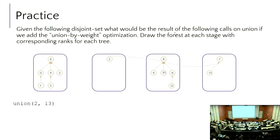We're going to take two and change its parent pointer to point to seven. By making this selection, notice that the height of the set in seven stayed the same — we added two into seven and that tree didn't get any taller. The shorter the tree, the faster the runtime, so we're trying to keep these trees as short as possible.